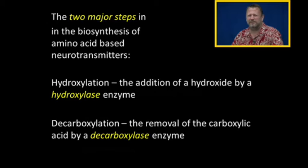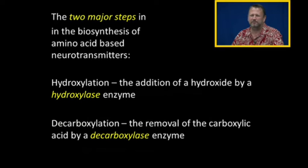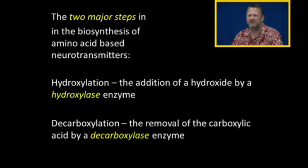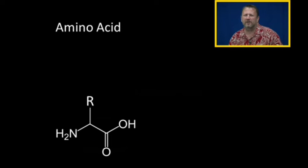The two most important steps in the biosynthesis of amino acid based neurotransmitters are hydroxylation — that's the addition of a hydroxide group, an oxygen group, done by a hydroxylase enzyme — and decarboxylation, the removal of a carboxylic acid, the same acid that's on an amino acid. That's done by decarboxylase.